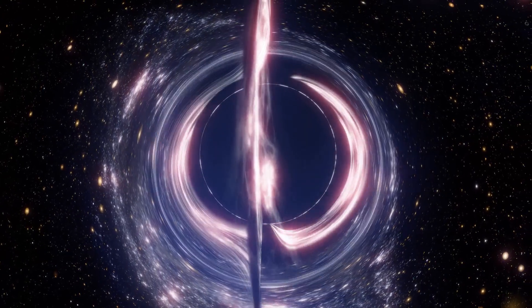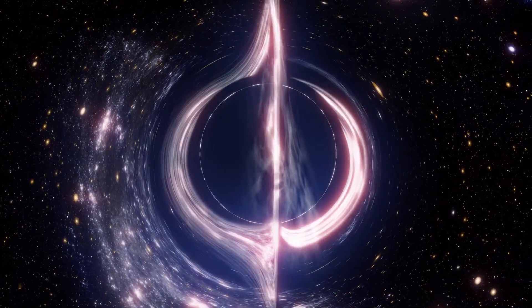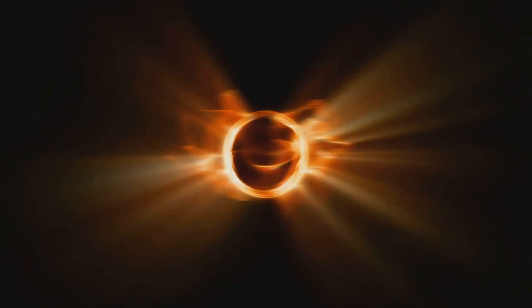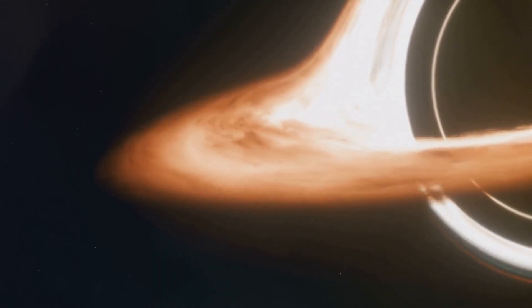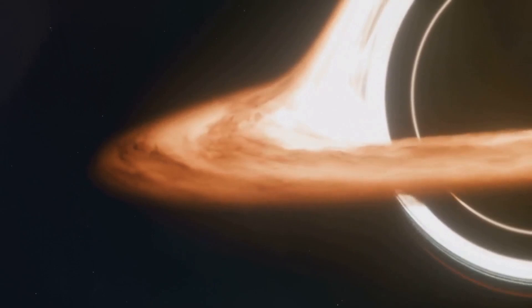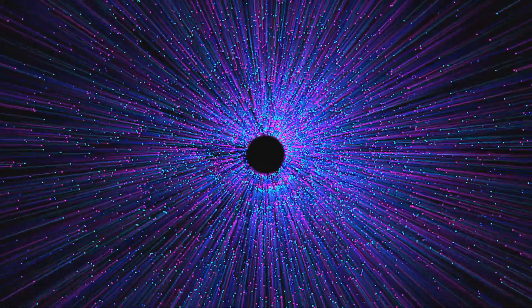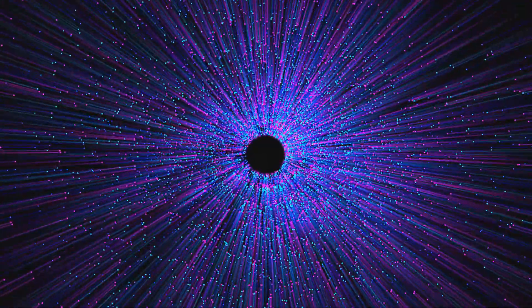If we were to encounter a white hole, what might we observe? Theorists propose it would possess an event horizon. This event horizon would act as a barrier that nothing can penetrate, a cosmic one-way exit door. From this event horizon, matter and energy would erupt, ejected from the white hole's singularity. Picture a cosmic geyser spewing forth particles and radiation.